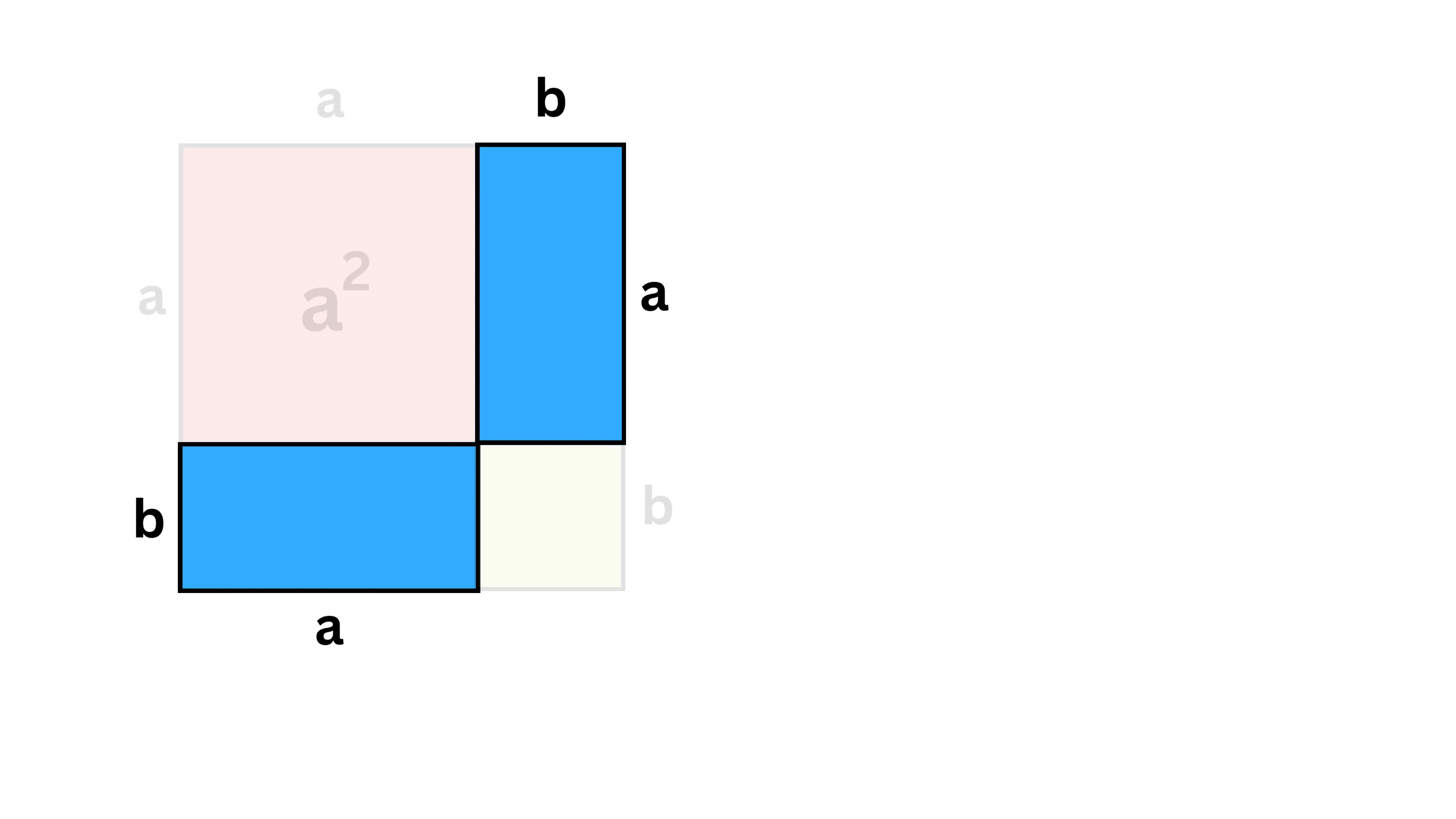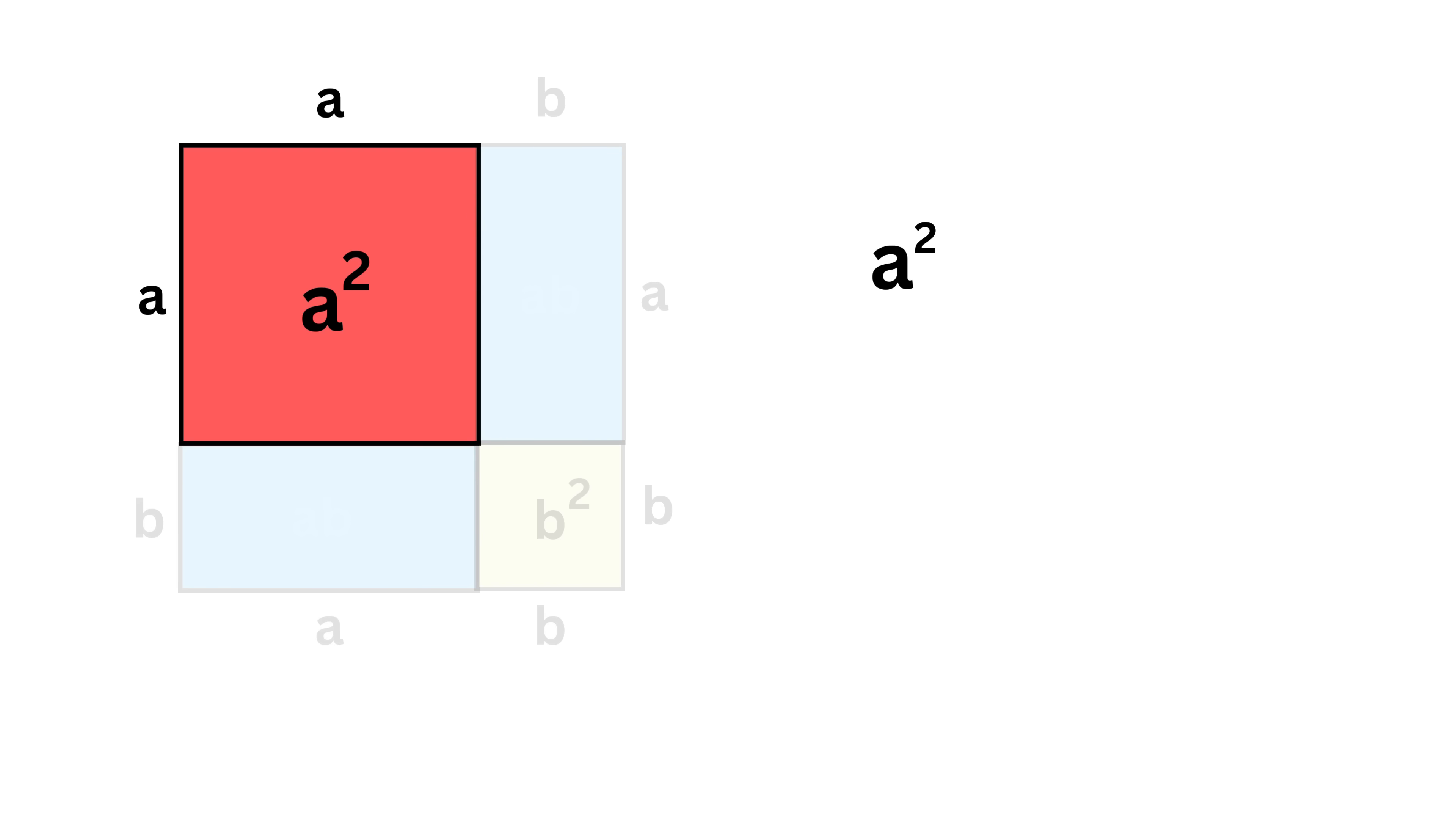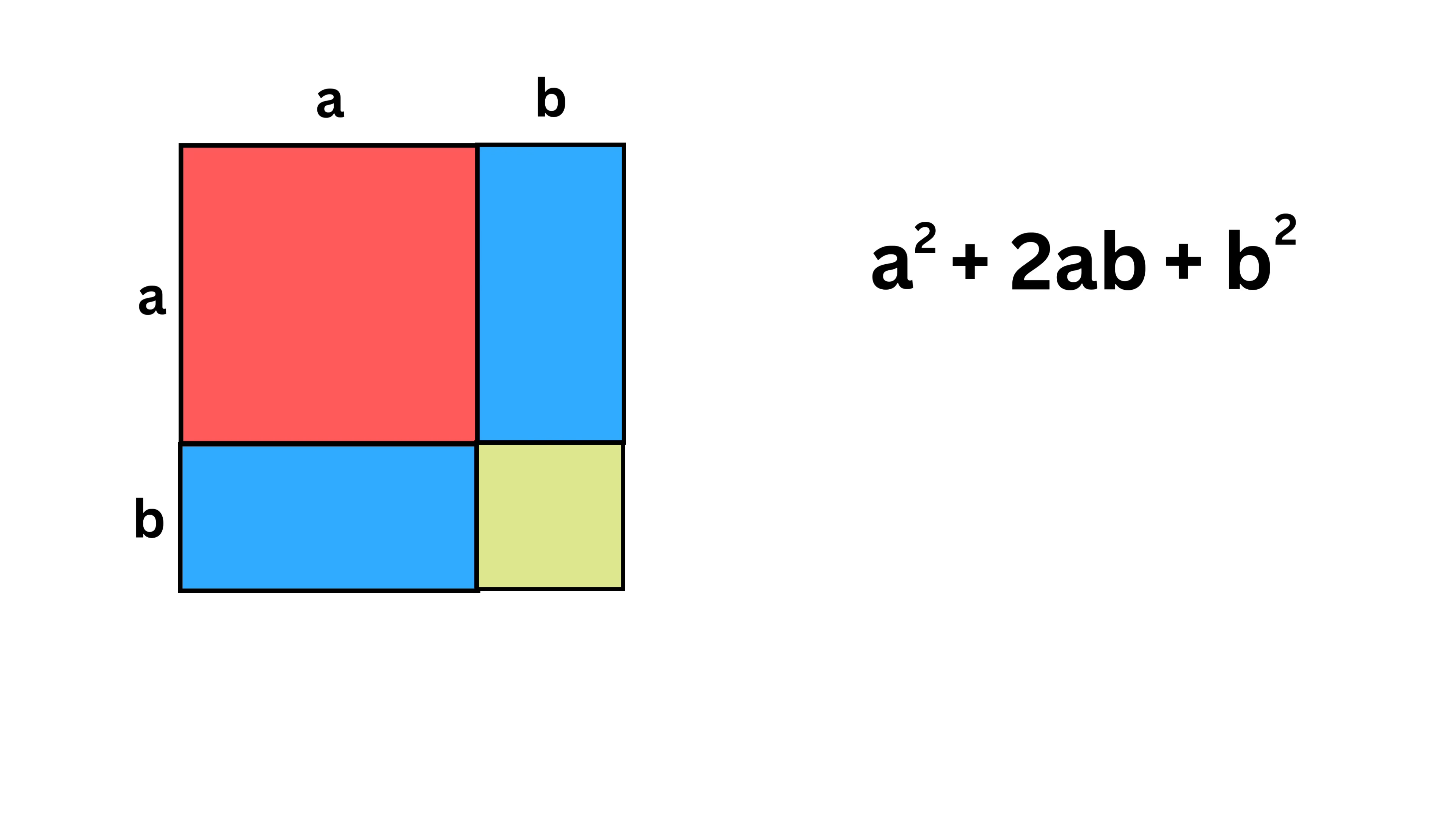Then the area of both these rectangles will be a times b, right? And the area of this square will be b². Add them together, we get a² + ab + ab, or 2ab + b².